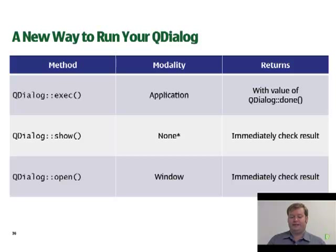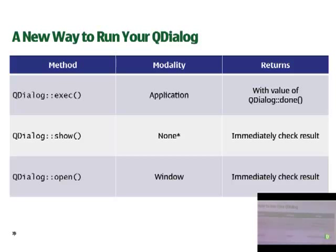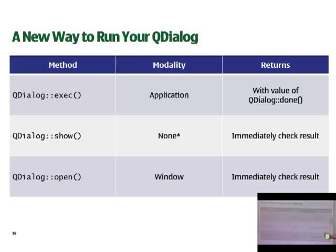We created new ways of running your dialog. The first two you're probably already familiar with. One is QDialog::exec — this is an application-modal way of running your dialog. It won't return until somebody has pressed OK or Cancel, and then you get the value from QDialog::done. You probably also know about QDialog::show. In general its modality is None, but if you want to play with setWindowModality you can get it to whatever modality you want. The difference is QDialog::show will return immediately so you can continue processing.